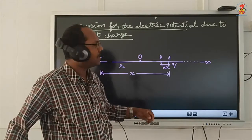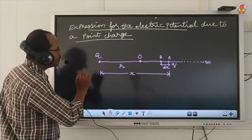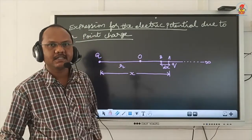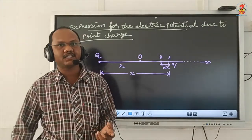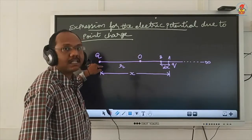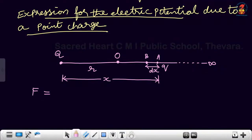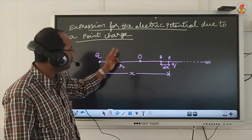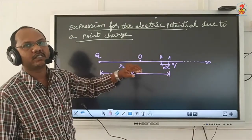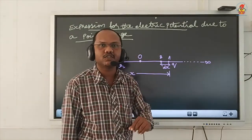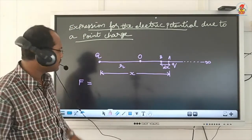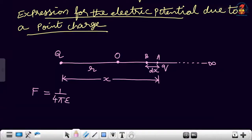Imagine a unit positive charge q at point A. We are going to find the electrostatic force of attraction or repulsion between capital Q and small q. Since both are positive charges, there will be a force of repulsion. If one charge is positive and the other negative, there will be attraction. Whatever the case, the equation is F = (1/4πε₀) × Qq/x².